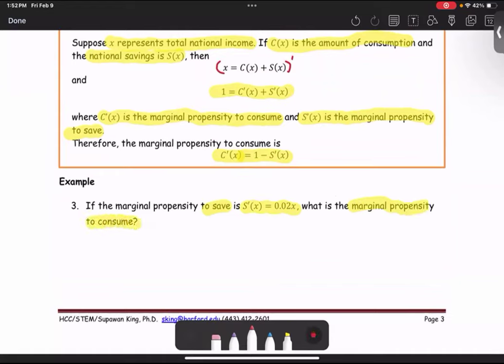If you do not recall the formula, you can set it up as 1 equals C prime of X plus S prime of X. We are looking for the marginal propensity to consume, which is C prime of X.